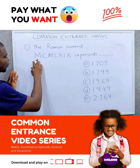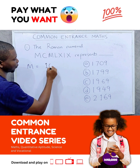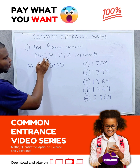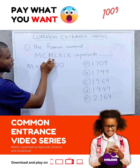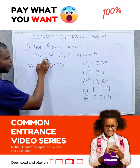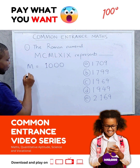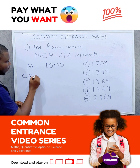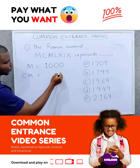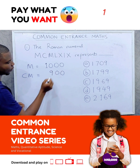Starting from the left, M is 1000. Then C — look at what's in front of C. M is in front of C and M is bigger than C, so you subtract C from M. We are subtracting 100 from 1000, so that would be 900.